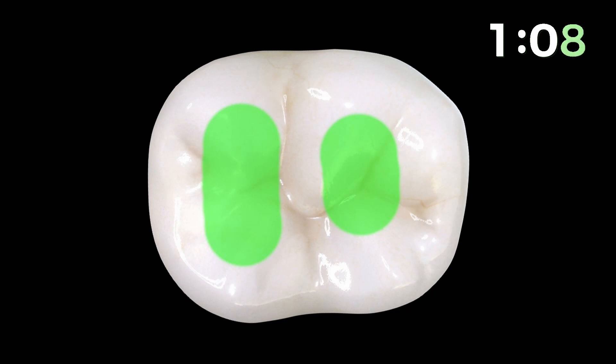In case of a mandibular molar, the mesio buccal and mesio lingual canals could be prepared with a single preparation, and the distal canal could be prepared as a single preparation, thus leaving intact tooth structure in between.